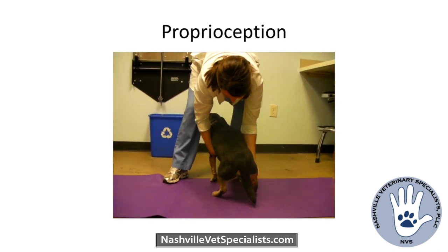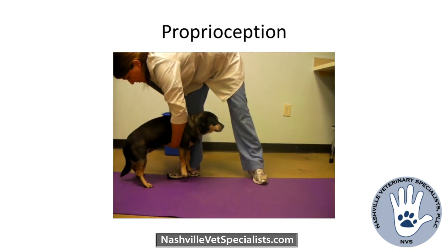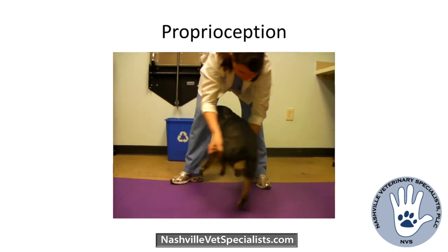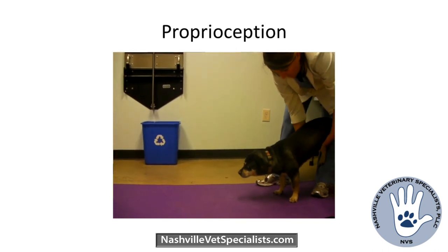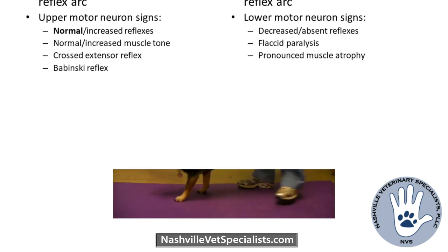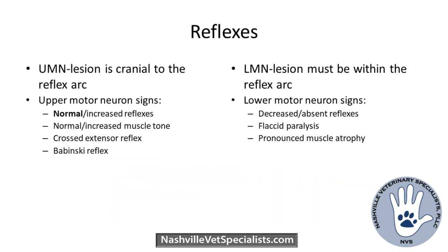For big dogs where you may not be able to pick them up and do each individual leg, you can do hemi-walking — picking up the legs on one side and pushing them to the other. For reflexes, I keep it simple: I basically test withdrawal in all four legs and then a patellar reflex. I don't do triceps, biceps, cranial tibial — mainly because they can be unreliable and hard to elicit in normal patients, and they don't really add a lot to the exam.